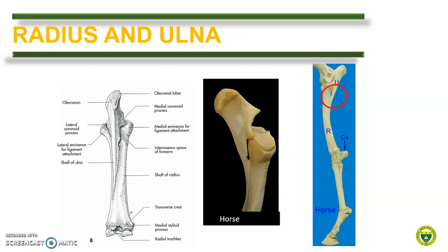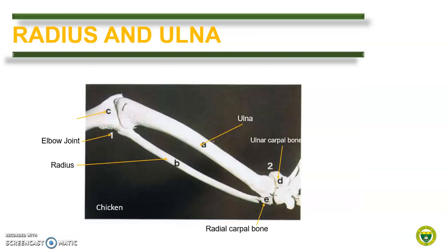In contrast with the rest of the quadrupeds, the horse ulna is shorter than the radius. The ulna is fused with the radius, with proximal and distal interosseous spaces. Interestingly, in birds, the ulna is more massive and longer than the radius. The two bones are not fused and there is a relatively wide interosseous space.